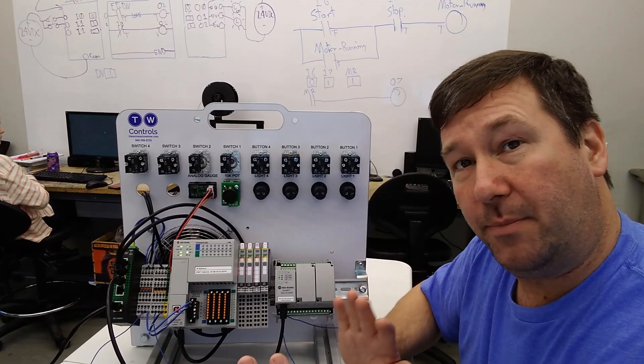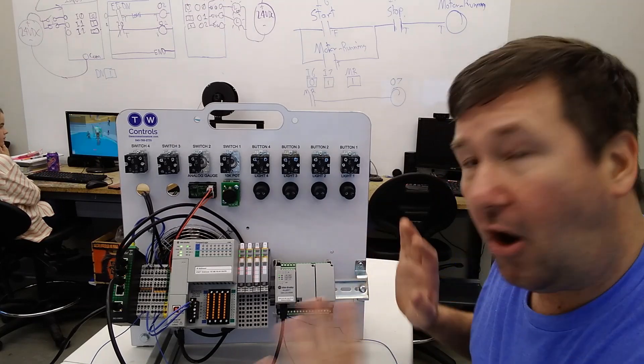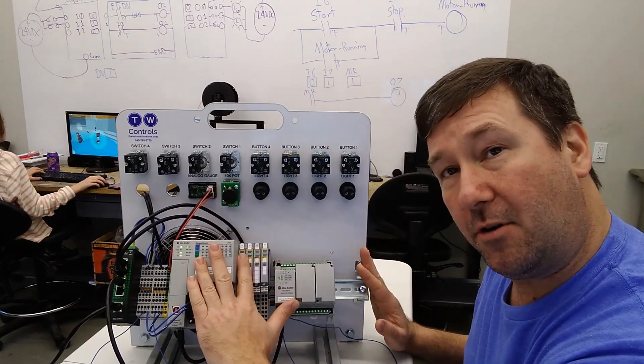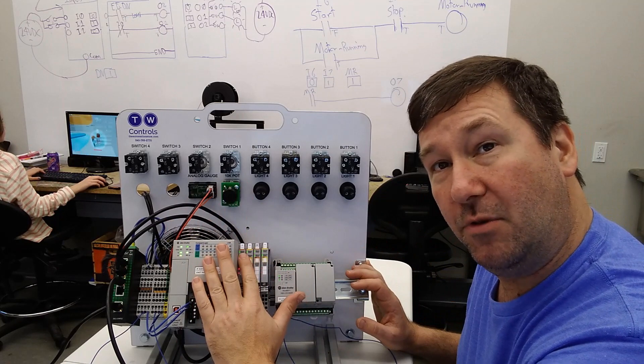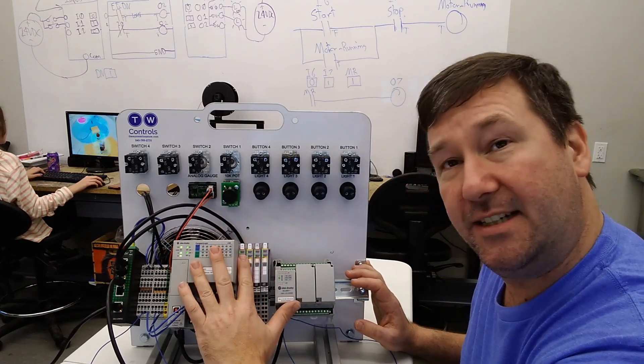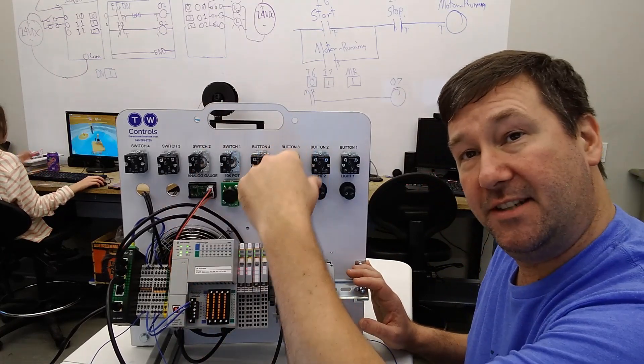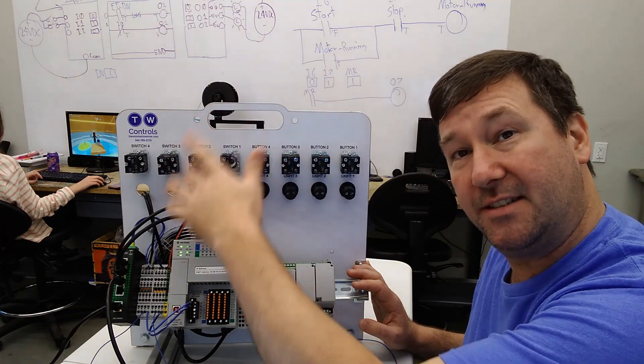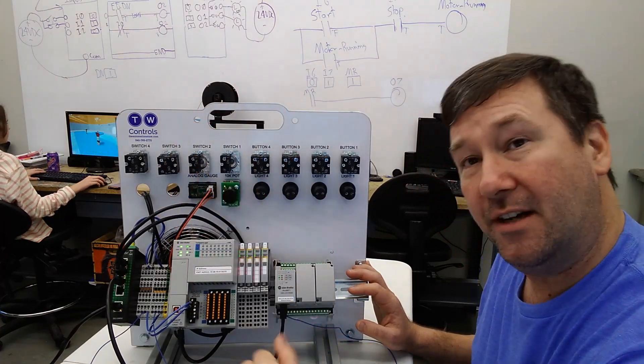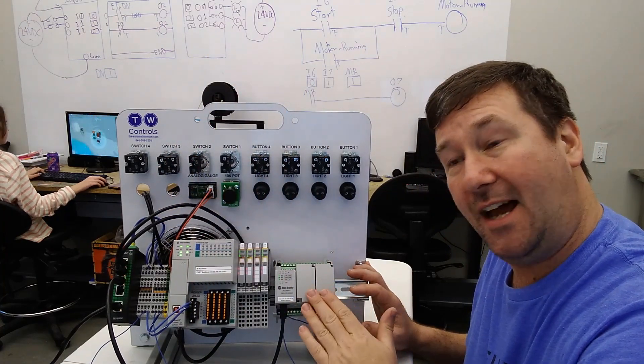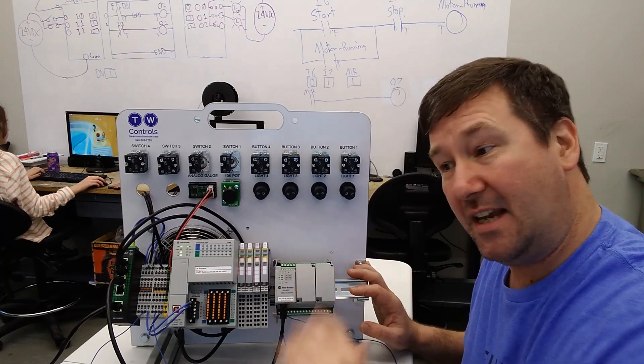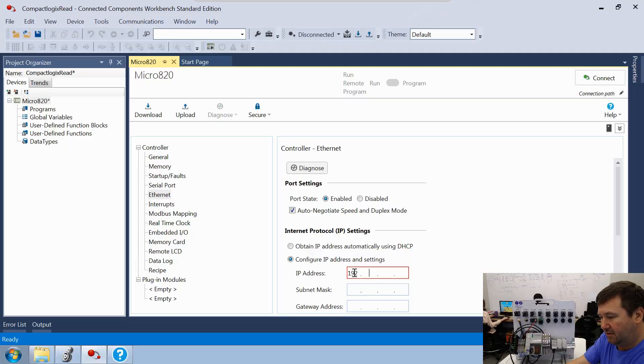This is a unique situation because on all of our trainers, the default IP address of our PLC is 192.168.1.10, and then 11 is the HMI, 12 is the drive on the other side of the trainer. Since we've added this on the side, we're going to need to make it 13. So let's make this 192.168.1.13 with a subnet of 255.255.255.0.